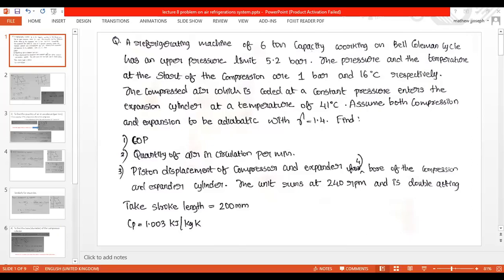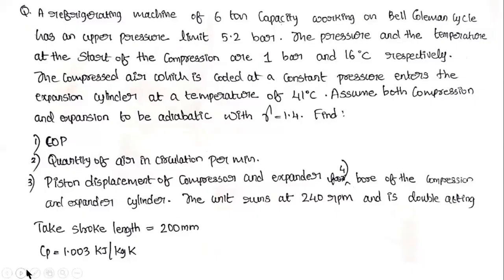Hello dear students, welcome back to our discussion on air refrigeration systems. Let us discuss a problem on the Bell-Coleman cycle, which is also called the air refrigeration cycle or reversed Joule cycle. The question: a refrigerating machine of 6-ton capacity working on the Bell-Coleman cycle has an upper pressure limit of 5.2 bar.